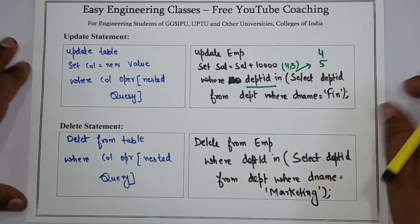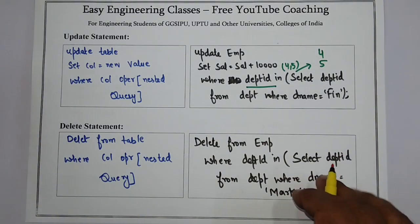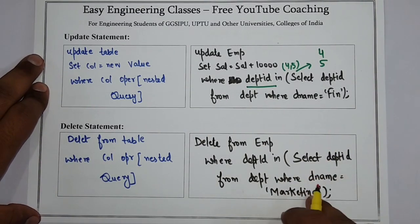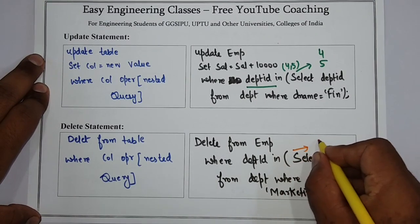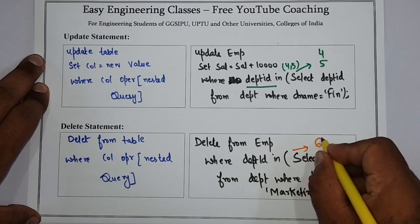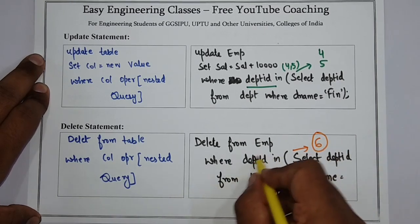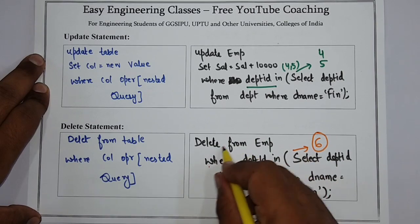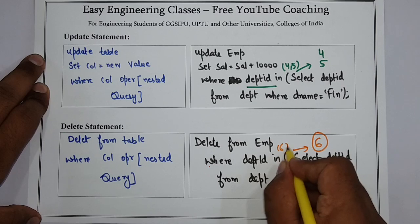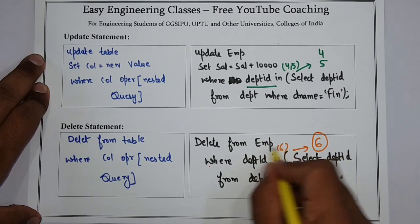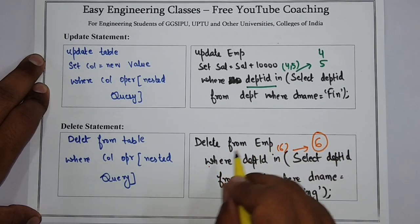In this query, what is happening is it will retrieve all the IDs of the marketing department — let's say it is six — and then it will delete from employee where department_id is six. So all employees in the marketing department will be deleted.